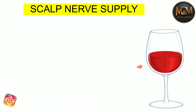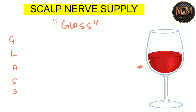So write it down — the mnemonic is 'GLASS' itself. Write it down: G, L, A, and double S.